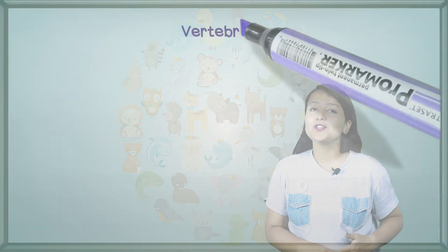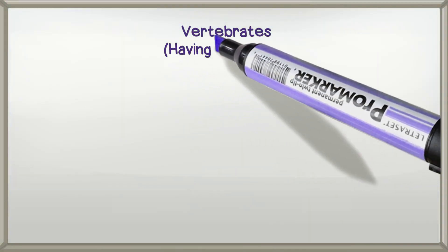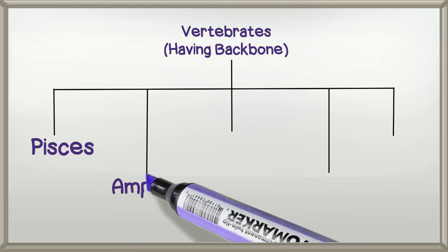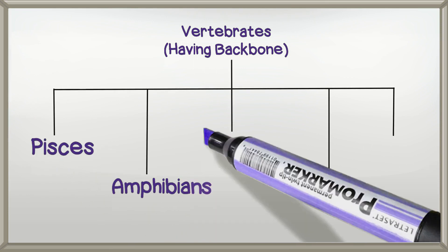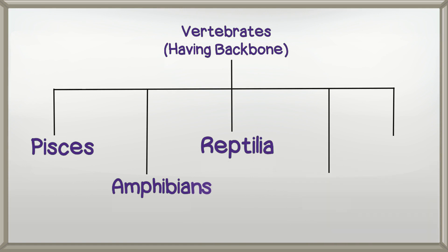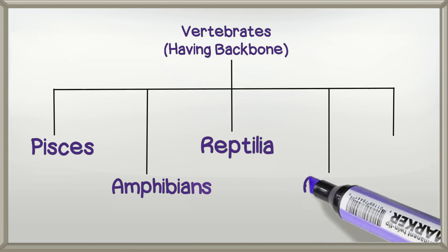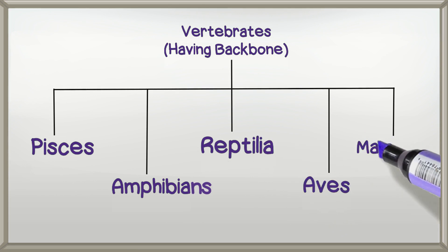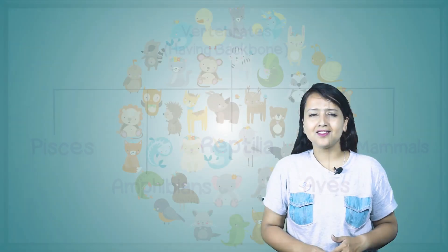Animals with backbone are classified into the following five classes: number one is Pisces, number two is amphibians, number three is reptilia, number four is aves, and number five is mammals. Now let's explain the major characteristics of each class.